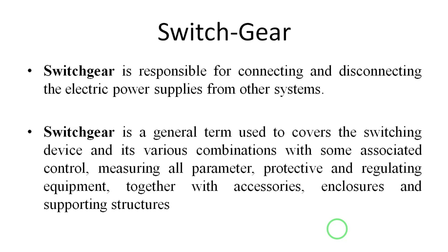The controlling part — for easy understanding, we can control a fan by using a fan regulator. In our home appliances, we control the speed of a fan with the help of a regulator. Similarly, in industries there is also a controlling part. In electrical substations, there is a controlling part where power is managed during different seasons, such as summer.